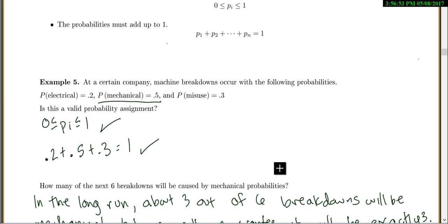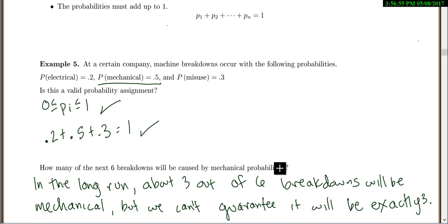In example 5, at a certain company, machine breakdowns occur with the following probabilities: electrical probability is 0.2, probability of mechanical is 0.5, and probability of misuse is 0.3. We want to know if this is a valid probability assignment. First you check, are all those probabilities between 0 and 1? 0.2, 0.5, and 0.3? Yes. Then you add up all the probabilities, and we get 1. So yes, this is good.